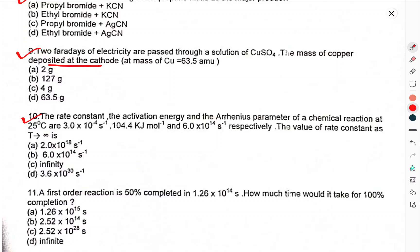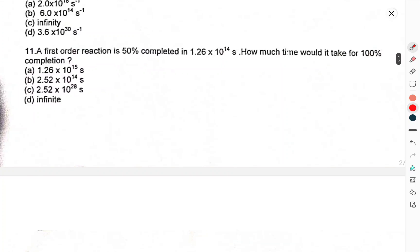Two Faradays of electricity are passed through a solution of CuSO4. The mass of copper deposited at the cathode is. Question 10: Rate constant, activation energy, and Arrhenius parameter for a chemical reaction at 25°C are 3.0×10⁻⁴ per second, 104.4 kJ/mol, and 6.0×10¹⁴ per second respectively. The value of rate constant is. Question 11: A first order reaction is 50% completed in 1.26×10¹⁴ seconds. How much time will it take for 100% completion?